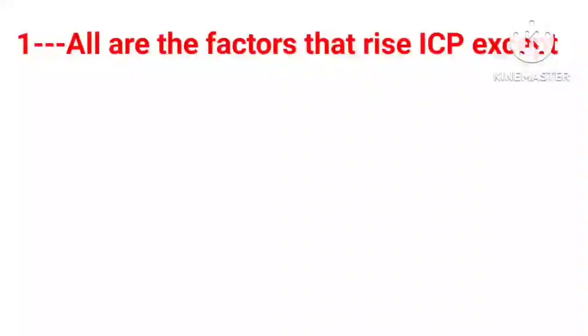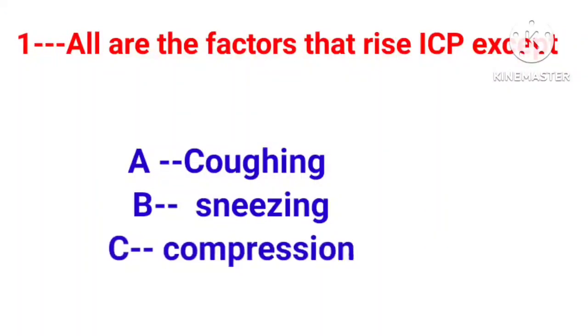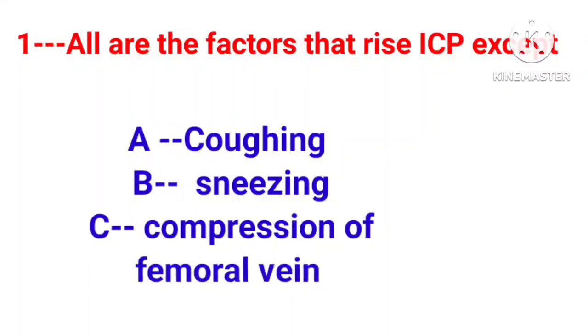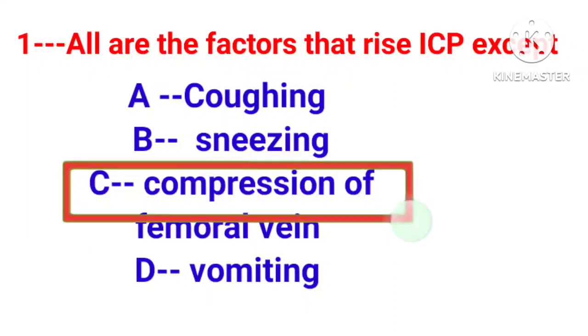Question number 1. All are the factors that rise intracranial pressure, except. Option A is coughing. Option B sneezing. Option C, compression of femoral vein. Option D vomiting. Correct answer is option C.